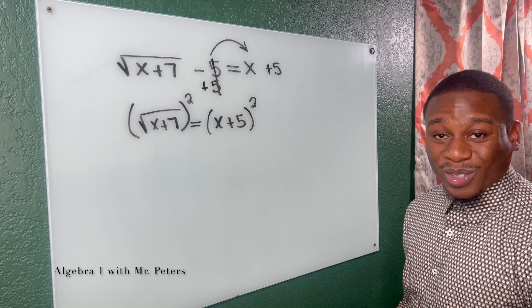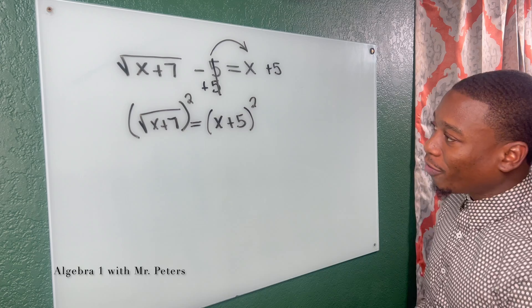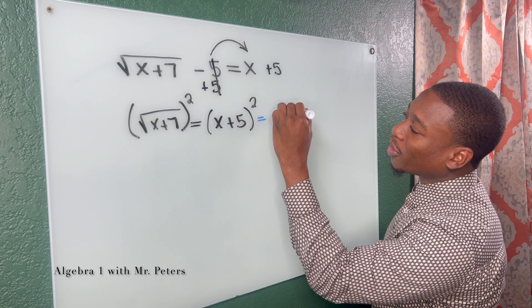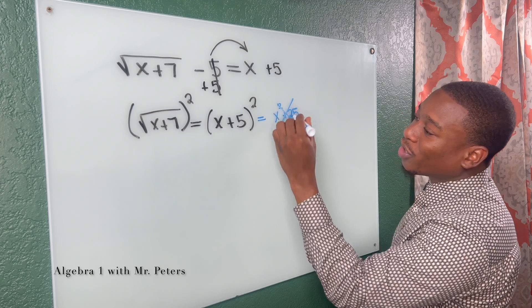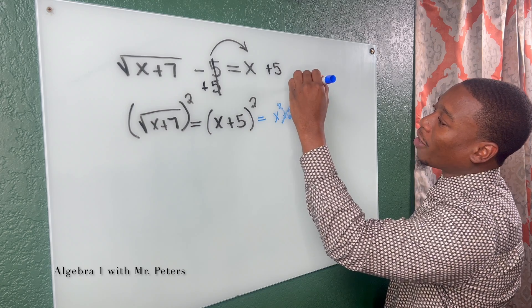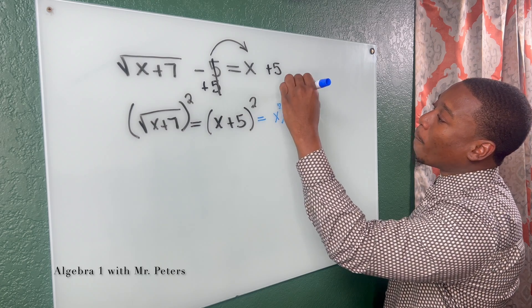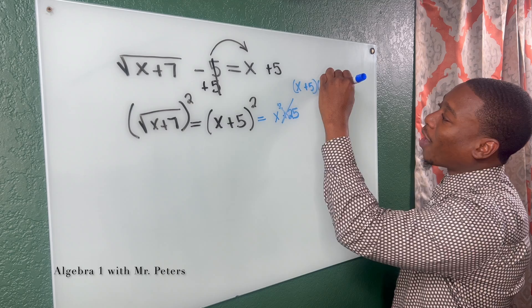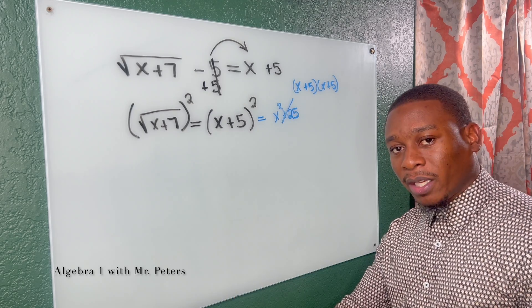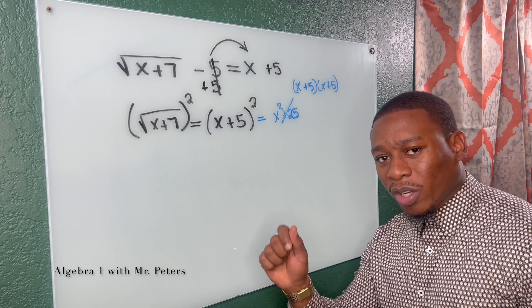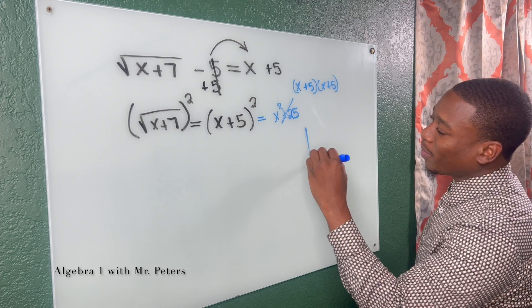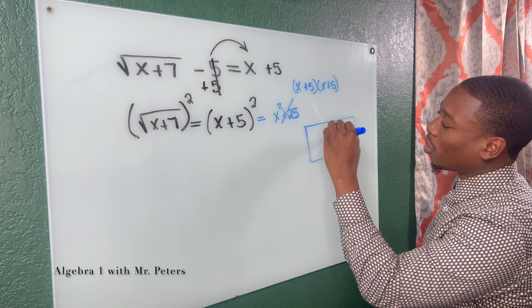Now for my students who are moving too fast, this does not equal X squared plus 25. If you just square these two terms, that is incorrect. What this is saying to us is we're going to have X plus five multiply by X plus five. And if you need help with foiling, I got a box method video attached down below. Check that out. I love the box method. So the box method basically gives us a visual component.